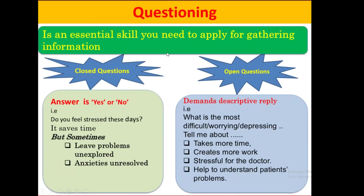Questioning is an essential skill needed for gathering information. In the Calgary-Cambridge framework, the most important part is gathering of information. You gather information by asking questions — two types: closed questions and open questions. Both can be used depending on the scenario or type of patient. A closed question is one where the answer is either yes or no — the patient does not describe in detail. For example: 'Do you feel stressed these days?' The patient answers yes or no.